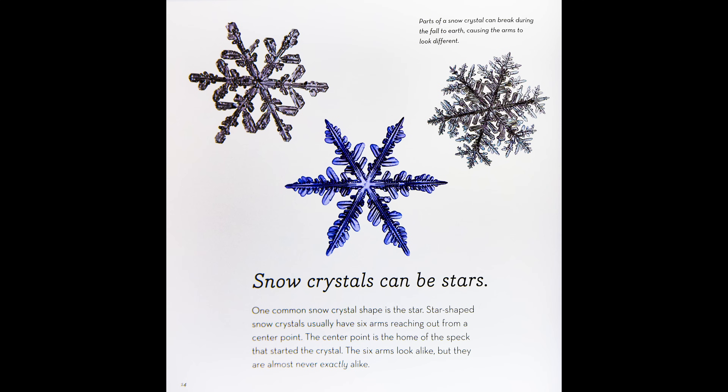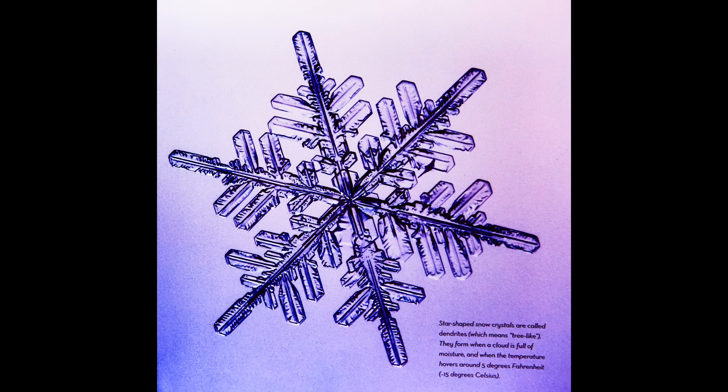Snow crystals can be stars. One common snow crystal shape is the star. Star-shaped snow crystals usually have six arms reaching out from a center point. The center point is the home of the speck that started the crystal. The six arms look alike, but they are almost never exactly alike. Parts of a snow crystal can break during the fall to earth, causing the arms to look different.